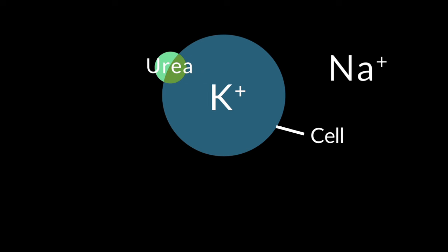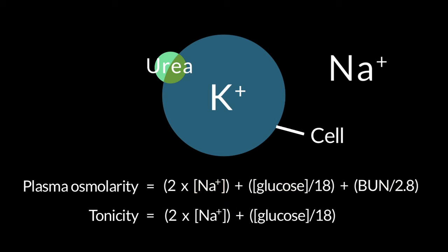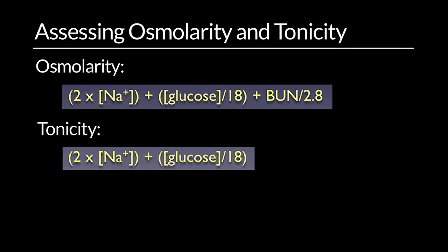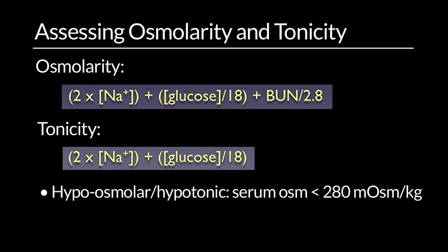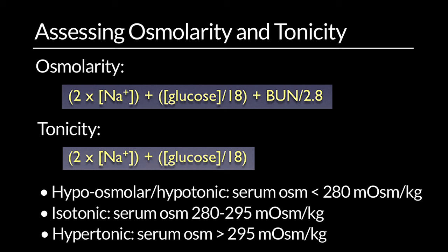To measure plasma osmolarity, you use a formula that takes into account sodium, glucose, and BUN. But if you think about the driving force for movement of water across the cell membrane, you should think about tonicity — which does not take into account urea, only sodium and glucose. Using these formulas, you can assess whether a patient is hypoosmolar (serum osmolarity less than 280), isotonic (280 to 295), or hypertonic (greater than 295).